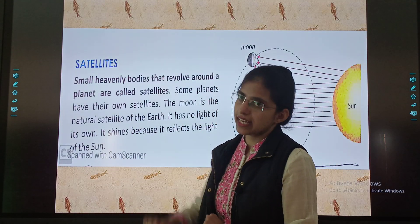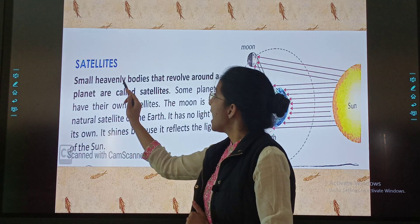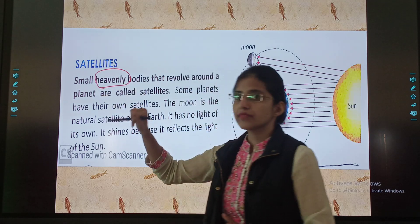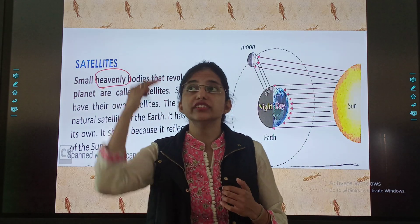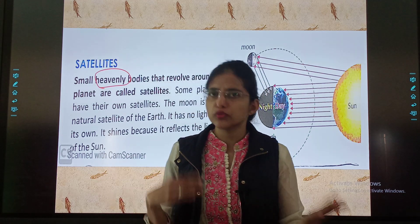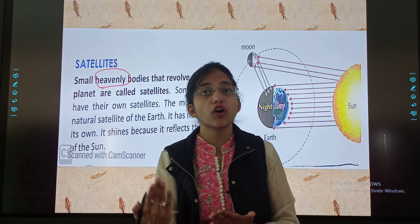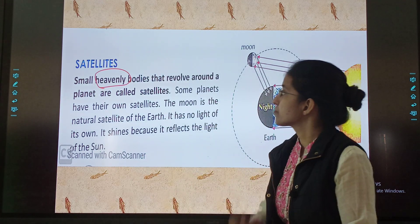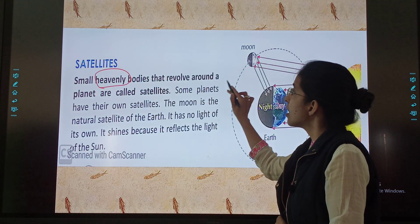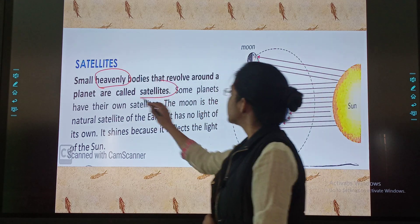Now comes our next topic, that is satellites. Small heavenly bodies — what do we mean by heavenly bodies? Those bodies which are found in space — for example, the sun, the moon — are called heavenly bodies. Small heavenly bodies that revolve around a planet are called satellites.